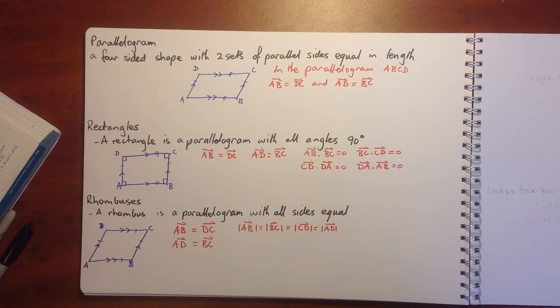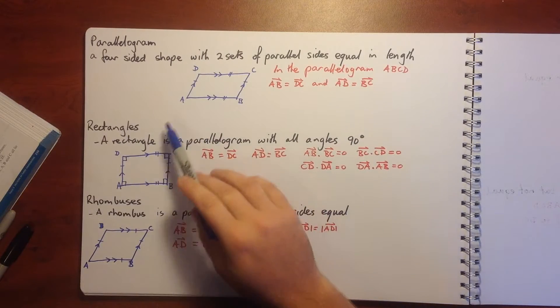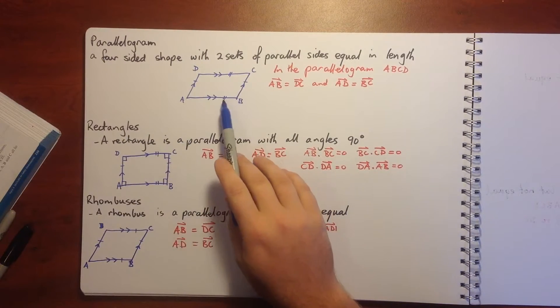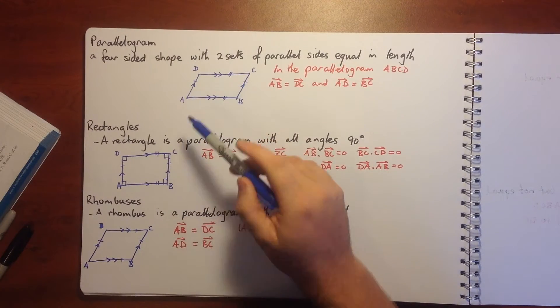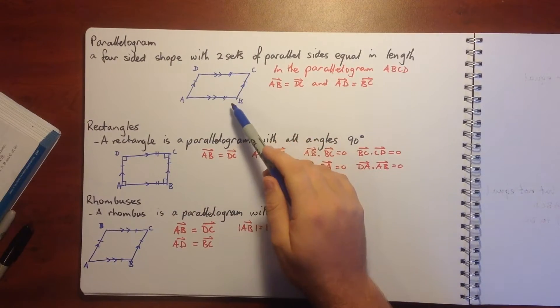For a parallelogram, a four-sided shape with two sets of parallel sides equal in length. So that means that vector AB equals DC and vector AD equals vector BC.